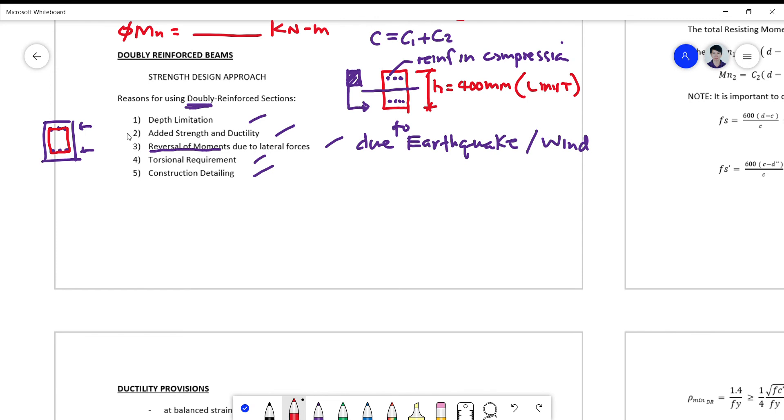So normally these are the five common reasons why we consider reinforcing your beam both in the compression and the tension side. So you call that double reinforced section, so the compression is at the tension,